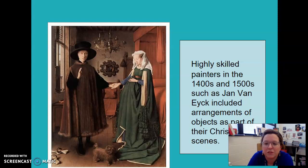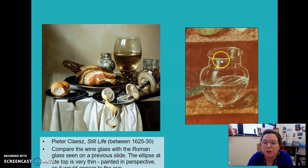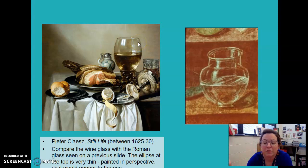Highly skilled painters in the 1400s and 1500s, such as Van Eyck, included arrangements of objects as part of their Christian scenes. There are different things around — multiple still lifes — but they're starting to put objects into the scenes to symbolize specific emotions or aspects of the story. You can see how much, especially looking at the glass, our brains as humans have evolved and the techniques and skills we have acquired over the years. As a species, we've really grown quite a bit.